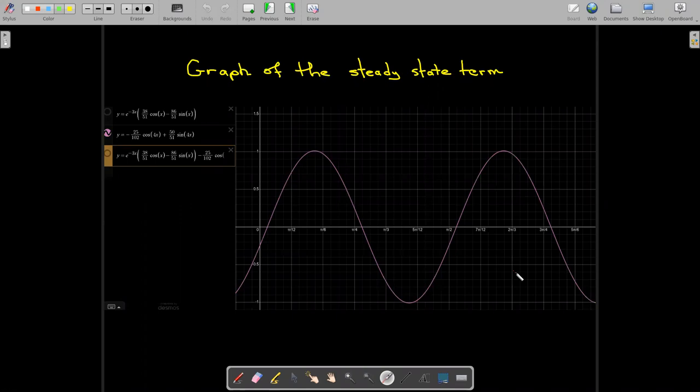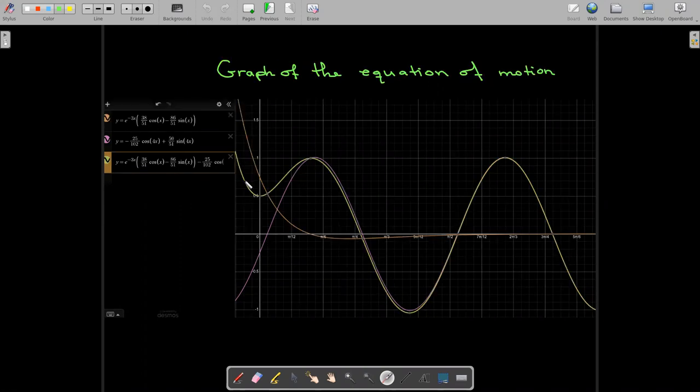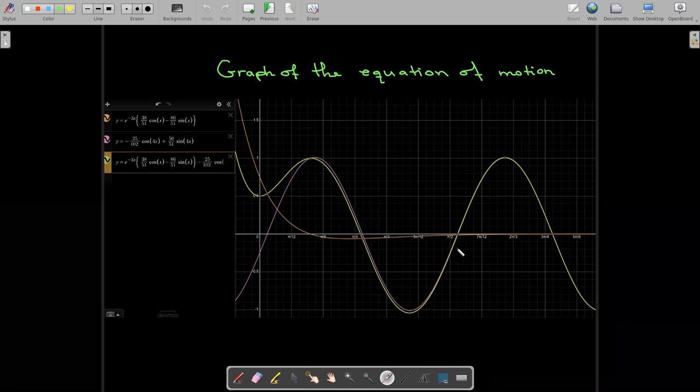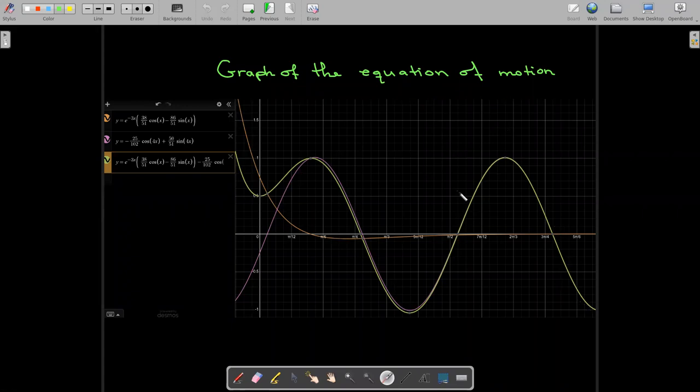The steady state is a sine wave. And then if we combine those together and graph all three. So the green here is our actual equation of motion. And you can see that really, and with this scale, by the time you reach π over 2, the steady state is indistinguishable from the actual solution, meaning that the transient term is making essentially no contribution.